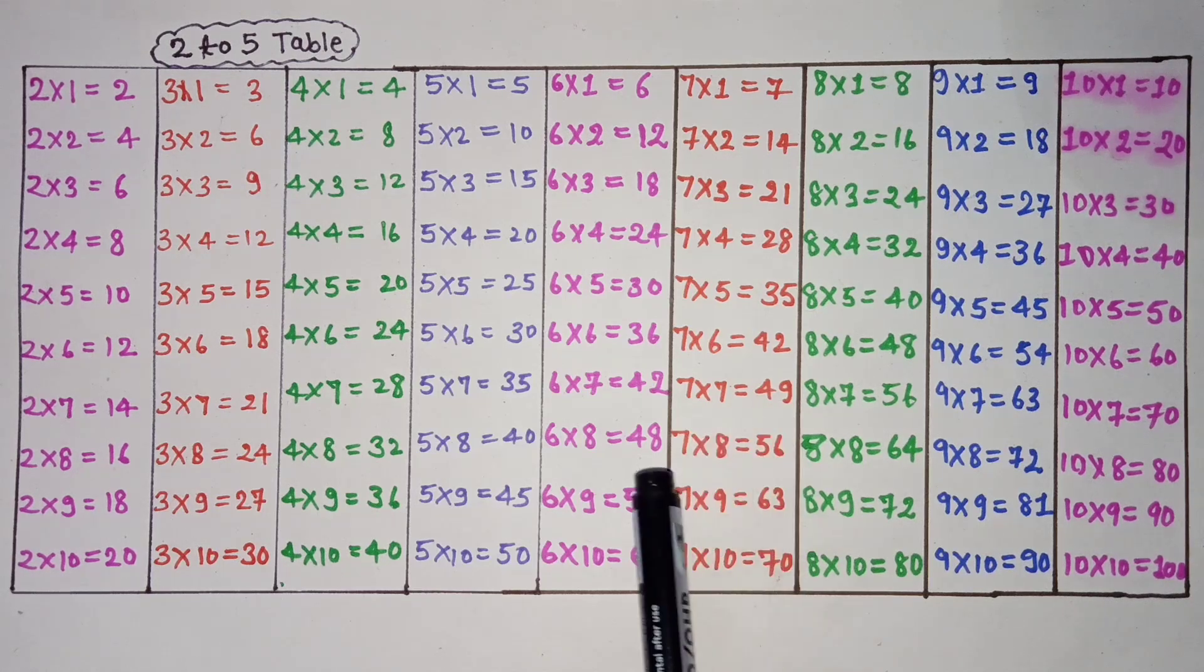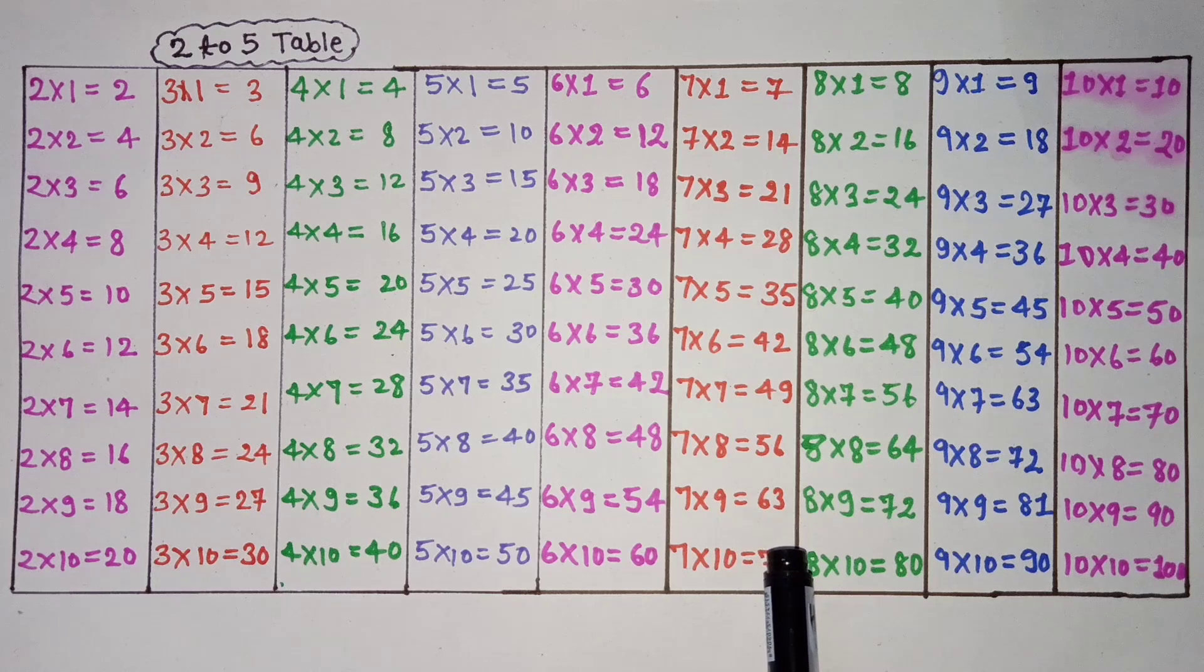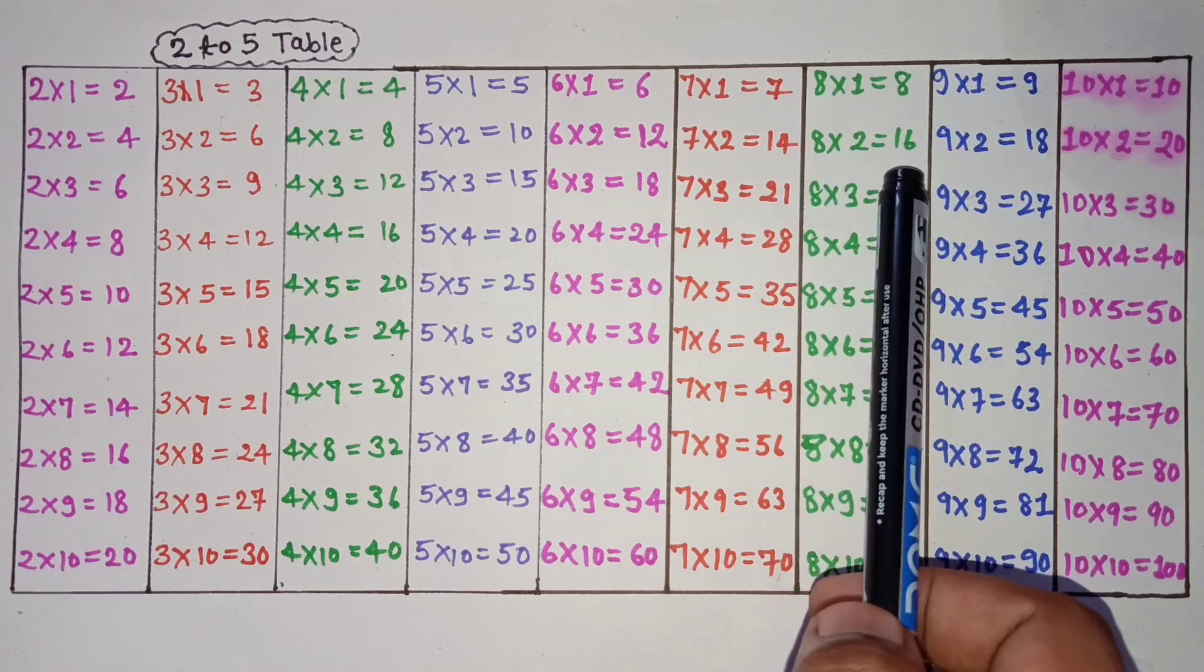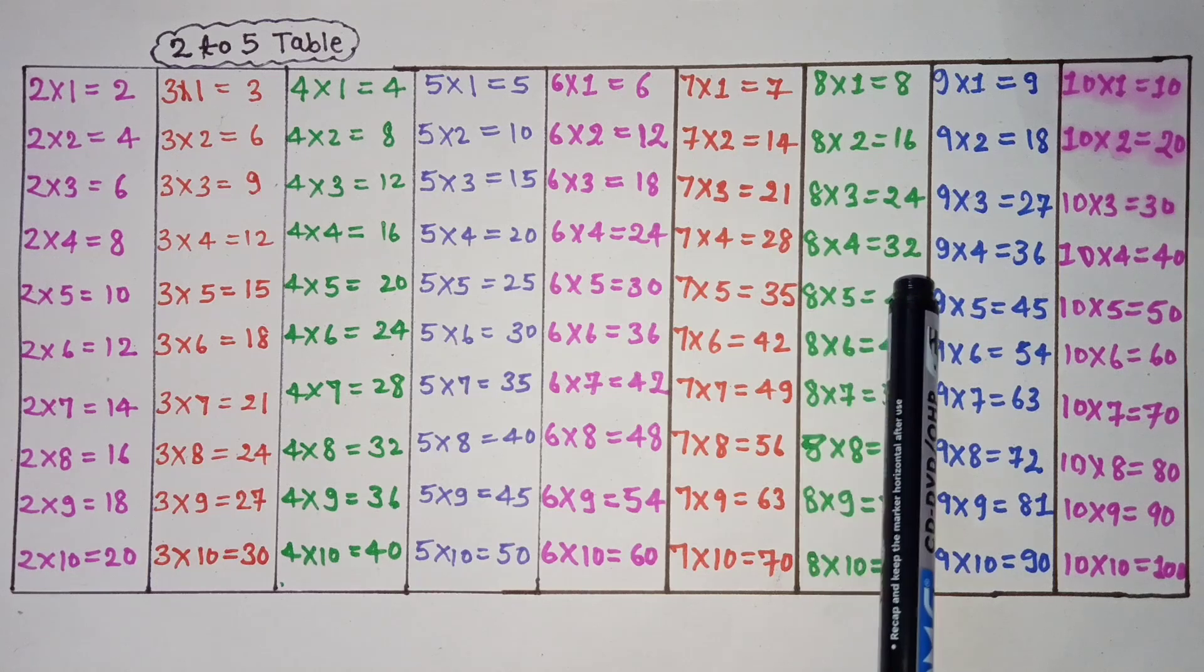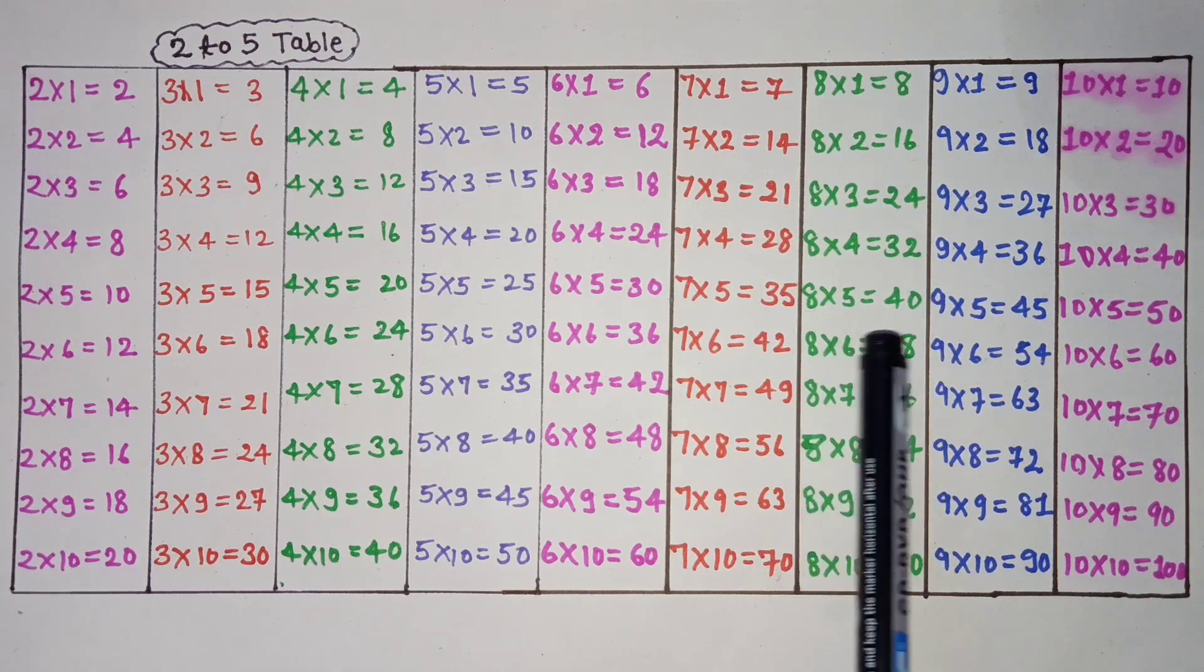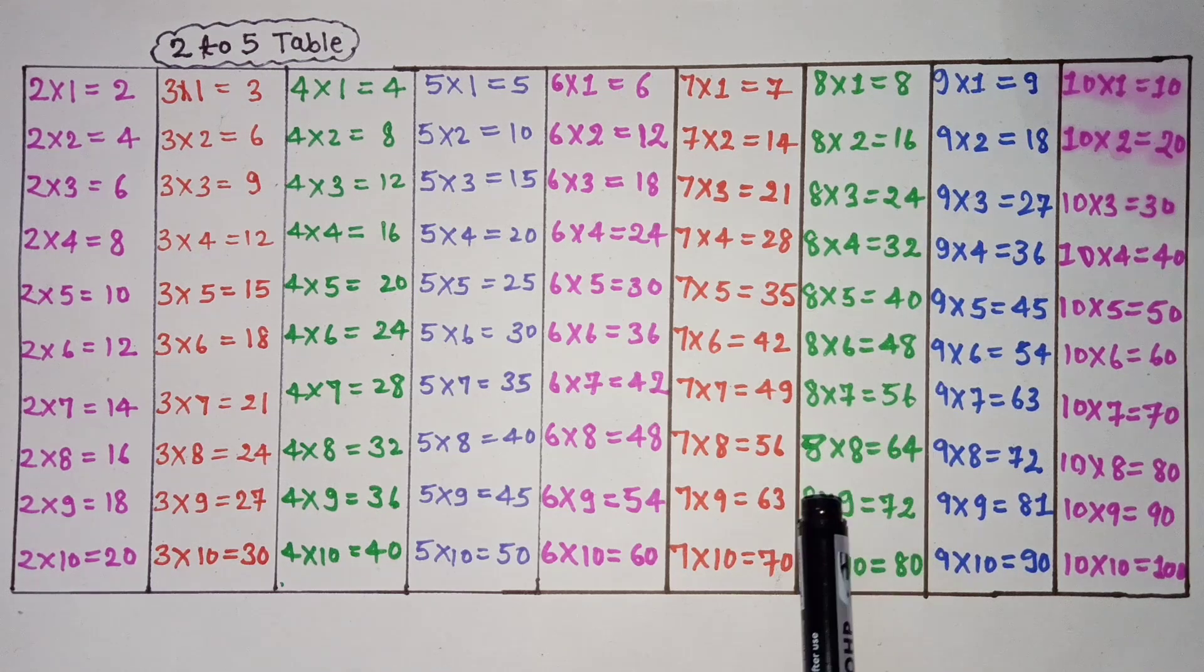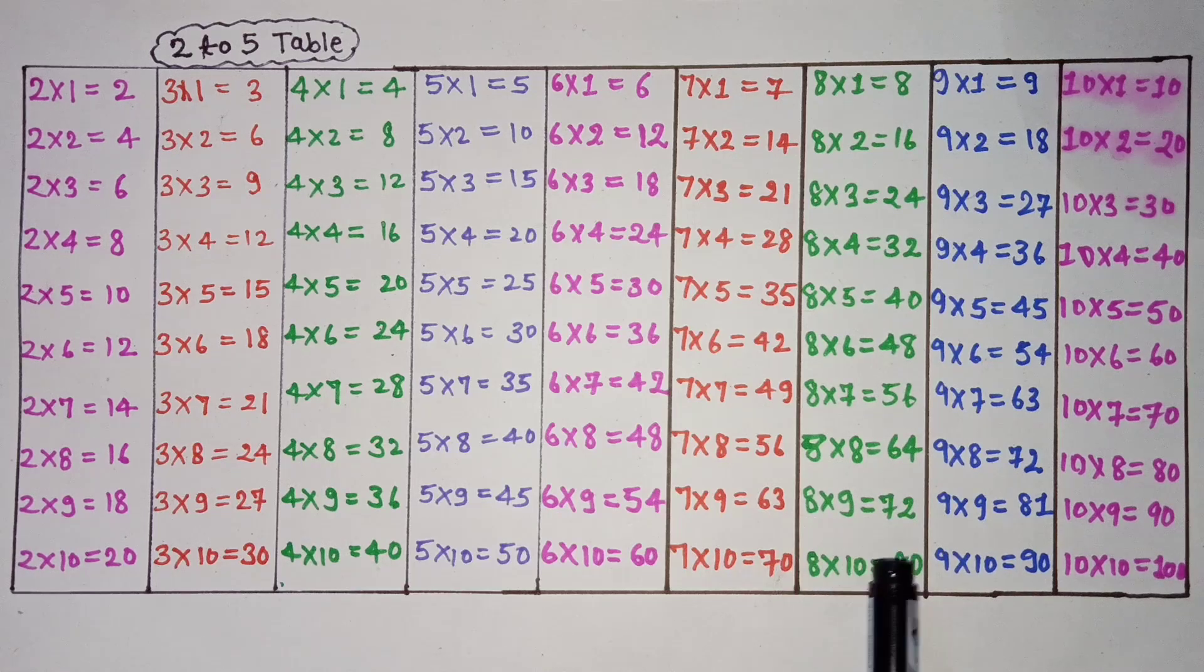7 times 8 is 56, 7 times 9 is 63, 7 times 10 is 70. 8 times 1 is 8, 8 times 2 is 16, 8 times 3 is 24, 8 times 4 is 32, 8 times 5 is 40, 8 times 6 is 48, 8 times 7 is 56, 8 times 8 is 64, 8 times 9 is 72, 8 times 10 is 80.